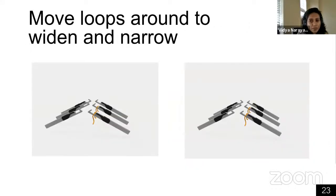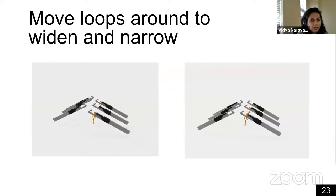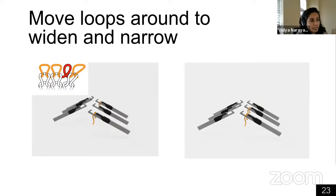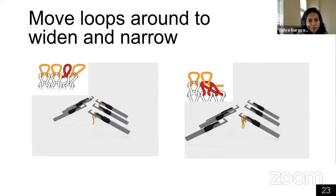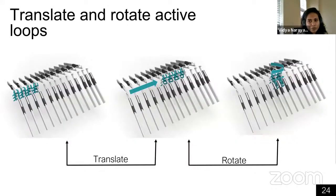On the left, you see two loops on adjacent needles. You can transfer one loop, rack the machine, and transfer it back to create space between them — this is how you widen fabric from three loops wide to four loops wide. The second example shows using transfer and rack to overlap two loops into the same needle location, narrowing your fabric from three loops to two loops wide. A combination of transfer and rack instructions can also be used to translate a patch of fabric from one location on the machine to another, or to rotate it.